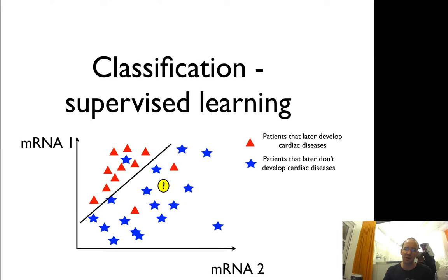You will try to find the kind of line that separates these two groups. In this case, this is someone who's not so likely to develop heart disease, the yellow one.